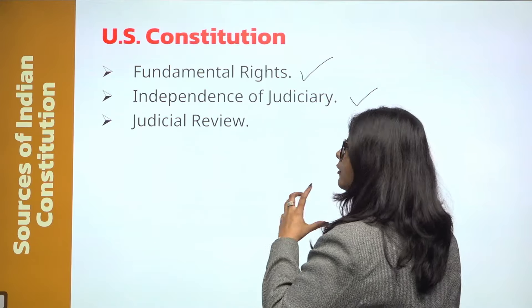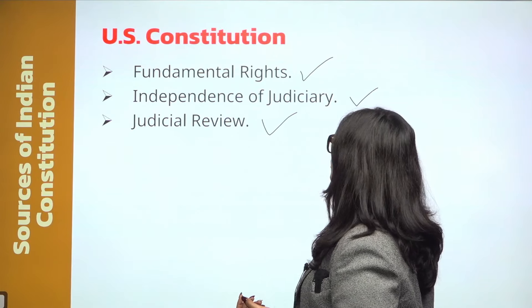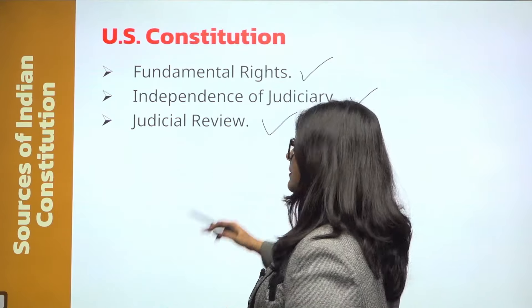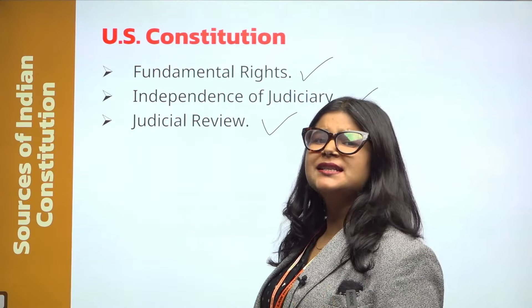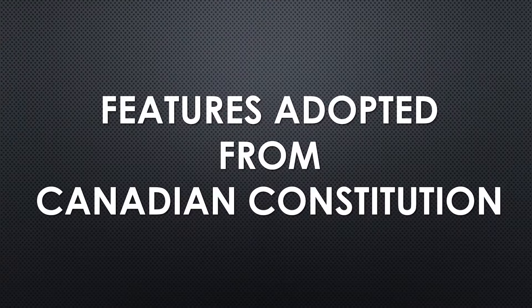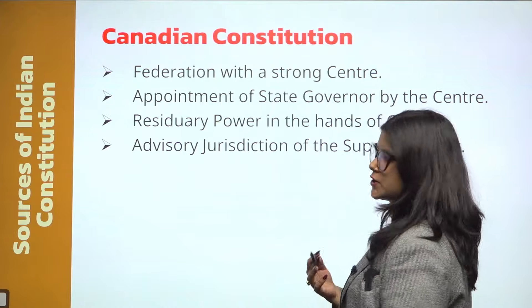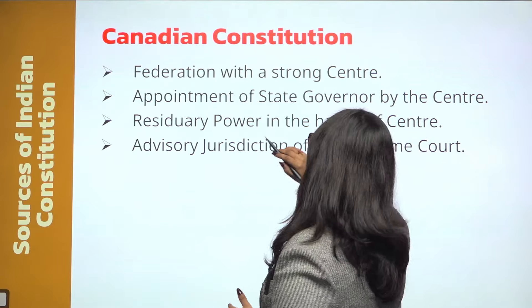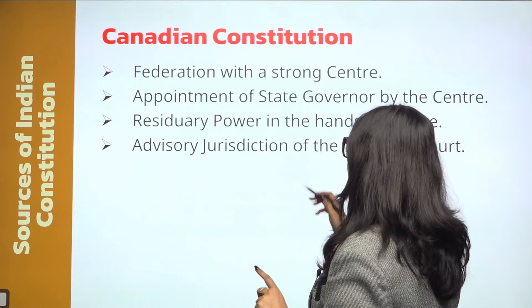Now let's look at what we have adopted from the US Constitution. All the Fundamental Rights we have adopted from the US Constitution. Next is the Independence of the Judiciary — that the judiciary is independent. This provision is also adopted from the US Constitution. Next is Judicial Review. These three sources are adopted from the US Constitution because what follows in the US is democracy, and these provisions are related to democracy.